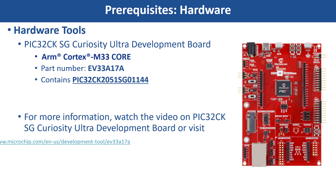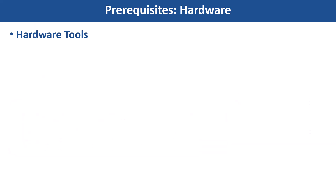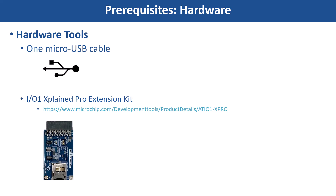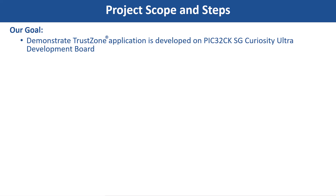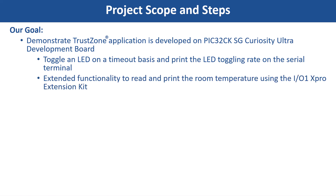For more information, watch the PIC32CK-HG-Curiosity Ultra Development Board video or visit the Kit page. Here, we also use a Micro-USB cable and an IO1 Explain Pro extension kit to test the extended functionality to read and print the current room temperature periodically. Our goal in this video is to demonstrate how a TrustZone-based application is developed on PIC32CK-HG-Curiosity Ultra Development Board. The demo toggles an LED on a timeout basis and prints the LED toggling rate on the serial terminal. Also, the demo has extended functionality to read and print the current room temperature using the IO1 Explain Pro extension kit.